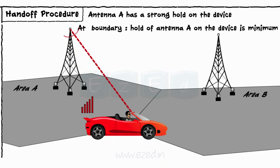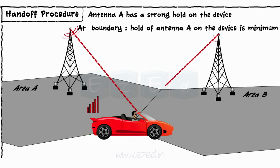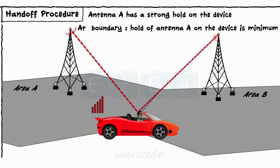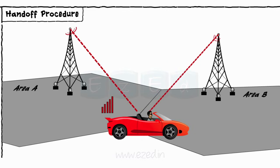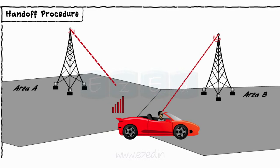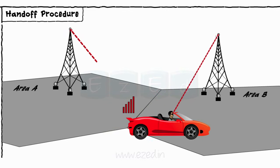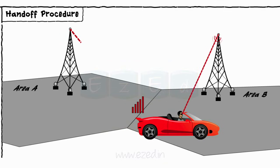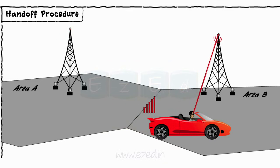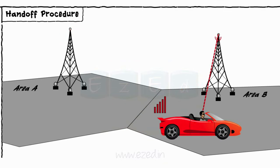At the same time, when the device is about to enter into cell B, base station B starts to take hold on the device. Thus, at the border of cell A and cell B, both antennas have an equal amount of hold on the device of user X. As user X crosses the border and enters into area B, the strength of base station A very rapidly decreases, and the strength of base station B rapidly increases.